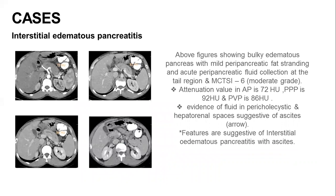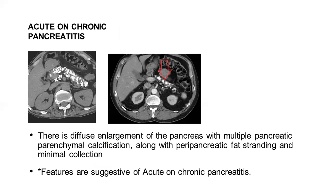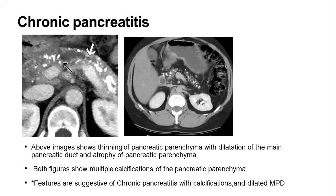This is a case of interstitial edematous pancreatitis in which the pancreas is bulky and edematous with mild peripancreatic fat stranding and peripancreatic fluid collections. This is a case of necrotizing pancreatitis in which the head, body, and tail of the pancreas are bulky with parenchymal necrosis and peripancreatic fat stranding. This is a case of acute on chronic pancreatitis with diffuse enlargement of the pancreas, multiple pancreatic parenchymal calcifications, and peripancreatic fat stranding.